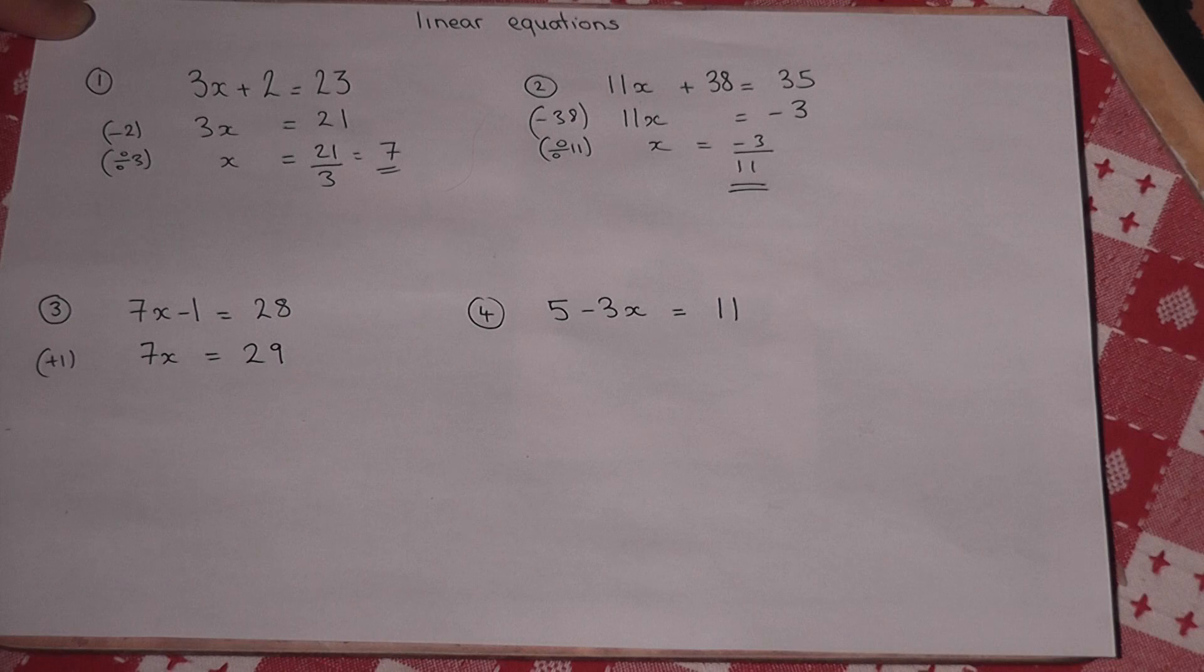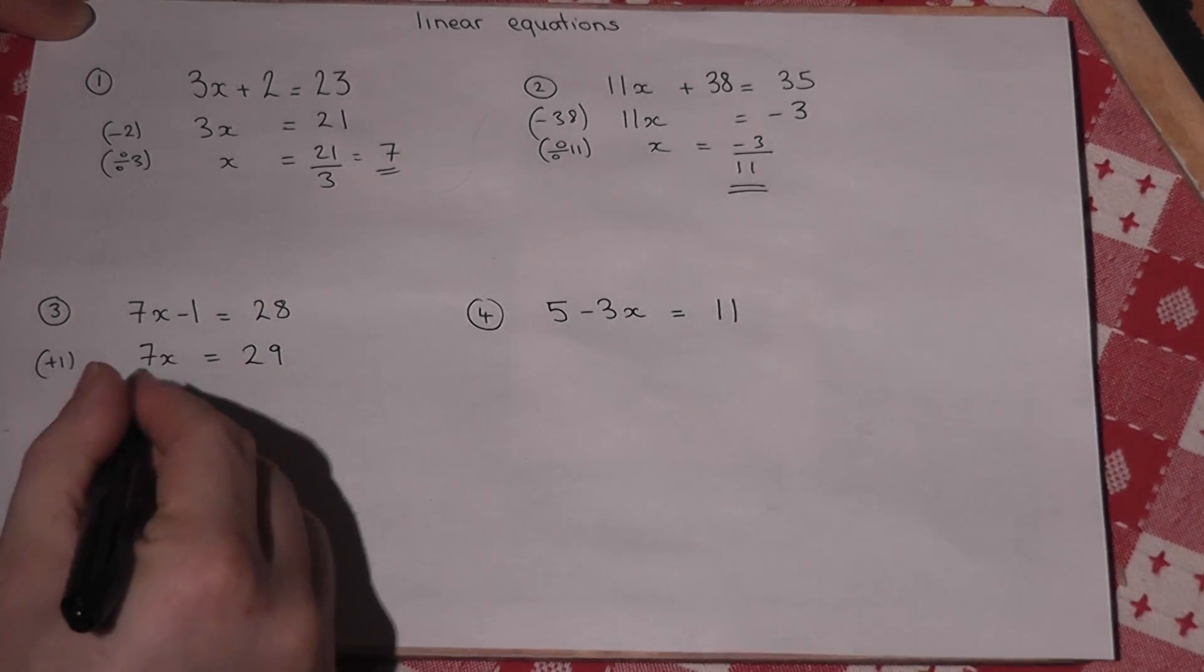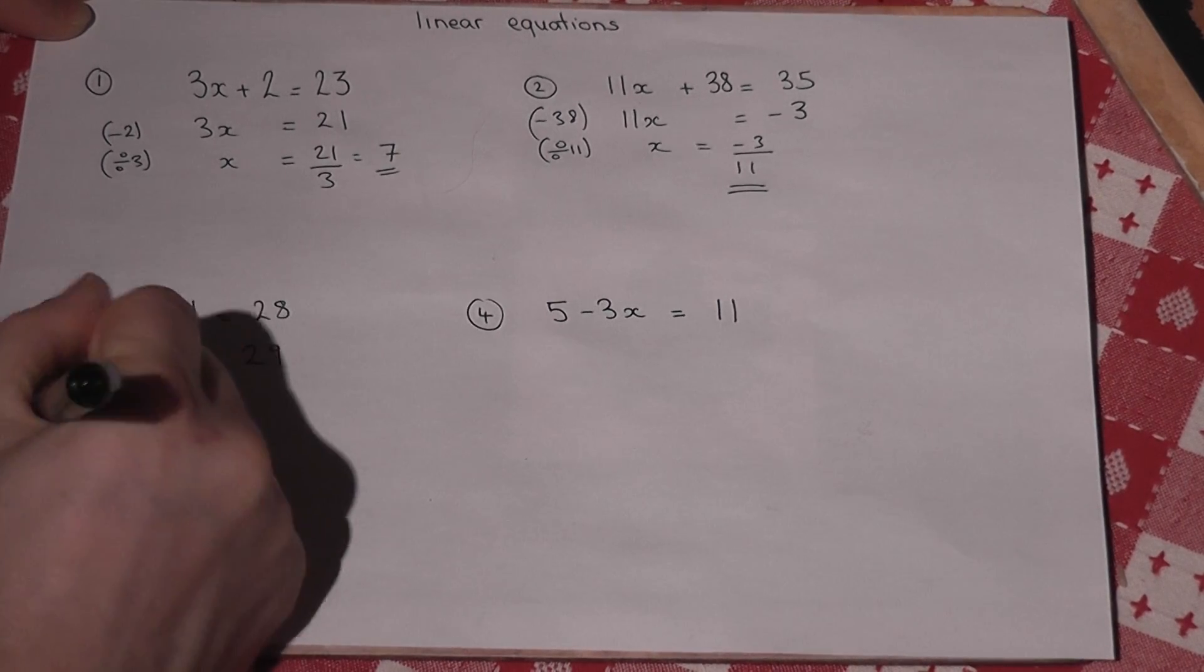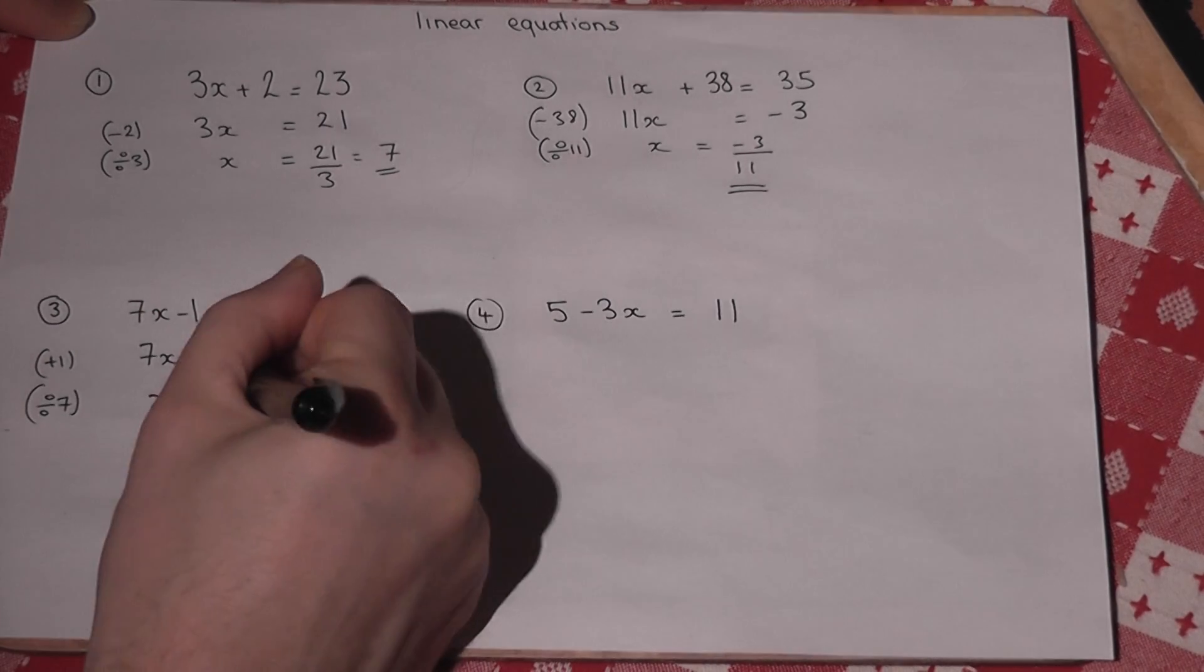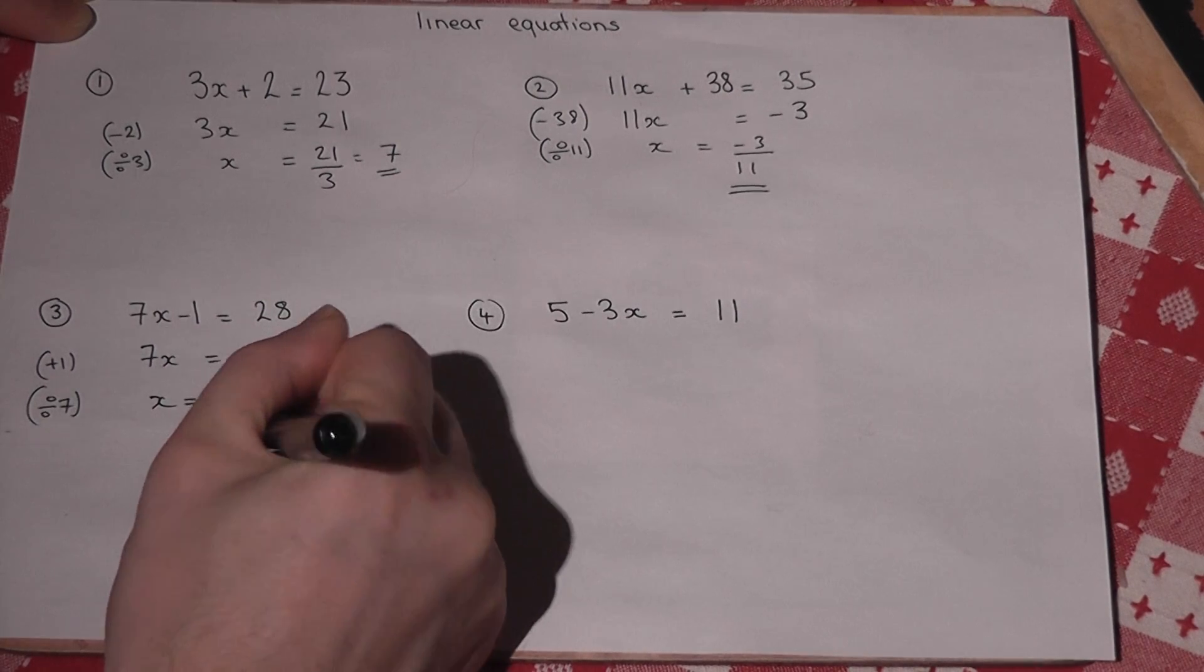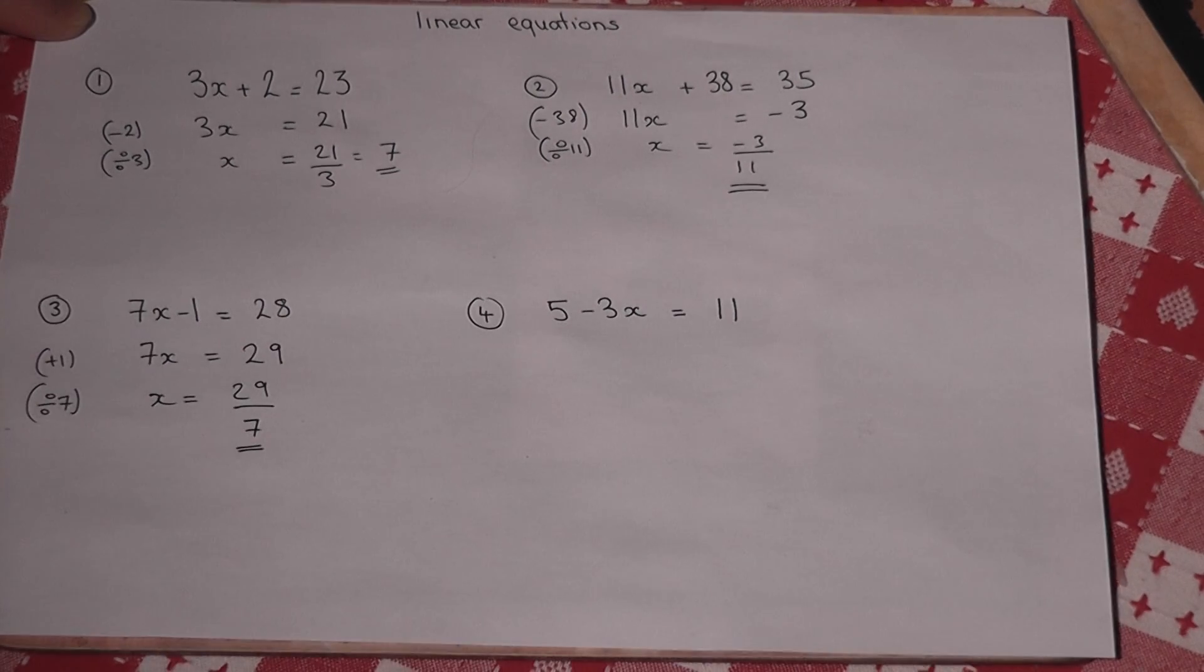I've added 1 to both sides. I then divide by 7. So x equals 29 divided by 7, a top heavy fraction.